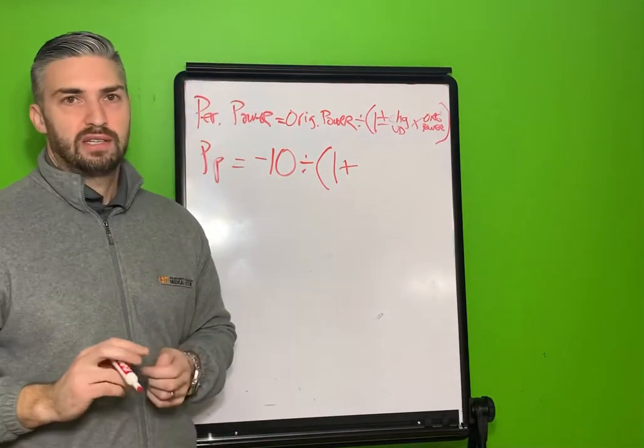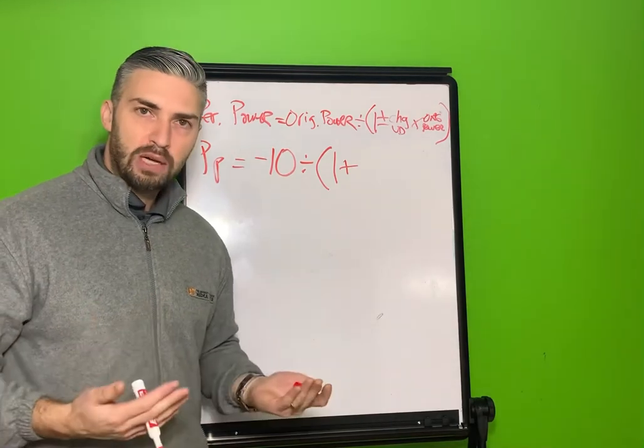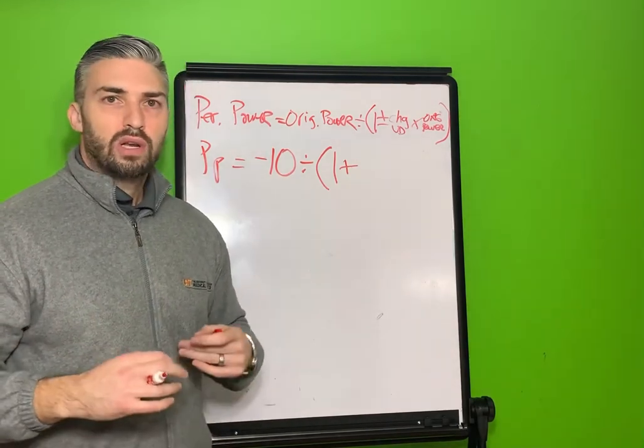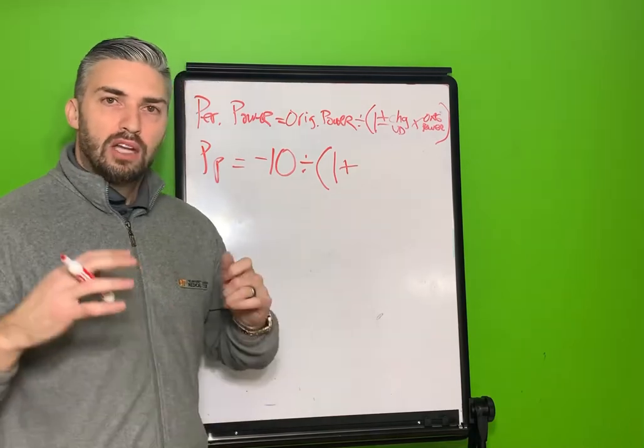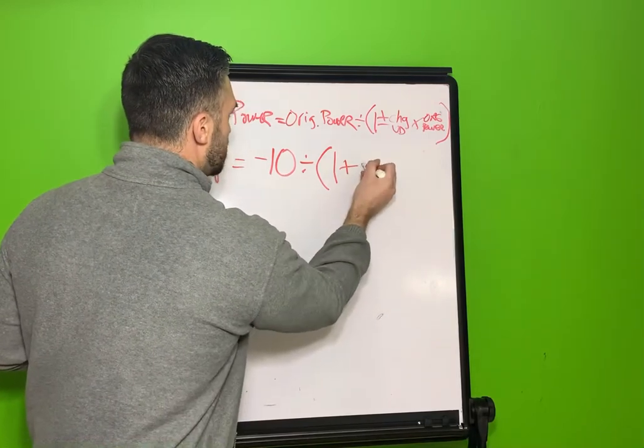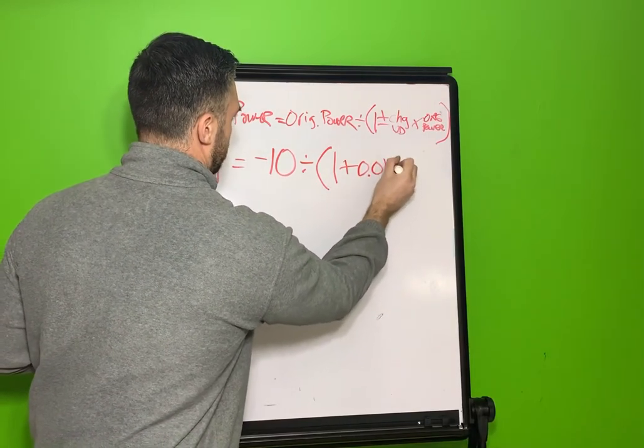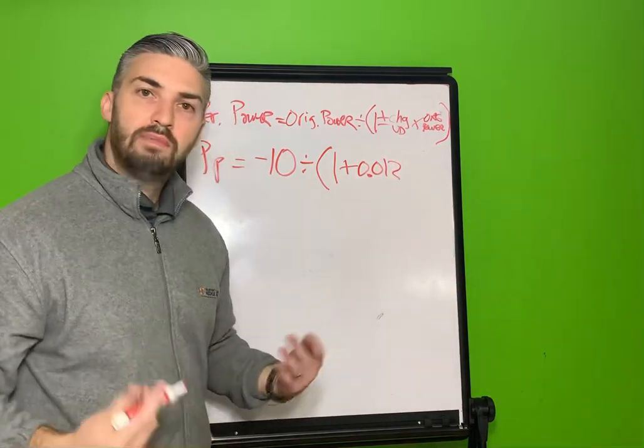Or we do plus the change in vertex distance. So we're going to say that the average phoropter is about 12 millimeters from the eye, so we're going to do 0.012, which would be 12 millimeters written out properly for this form. So it's 1 plus 0.012 times the original power.